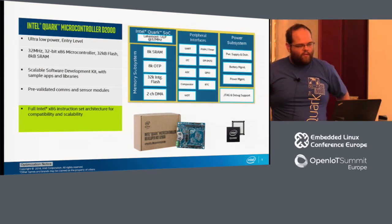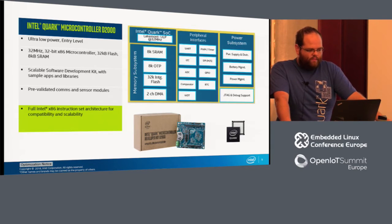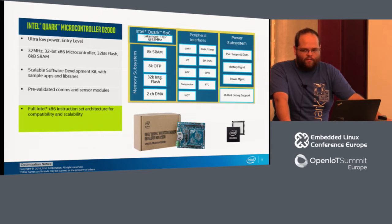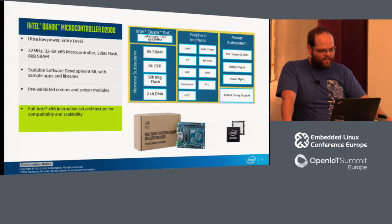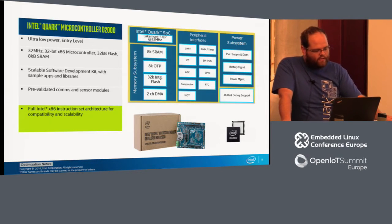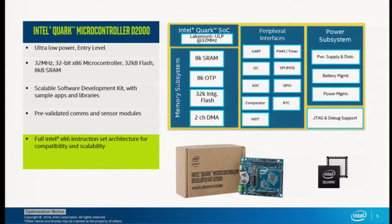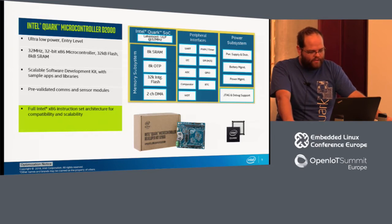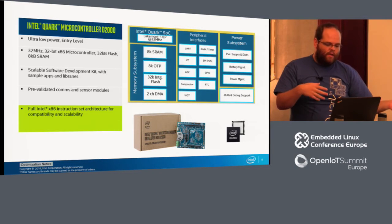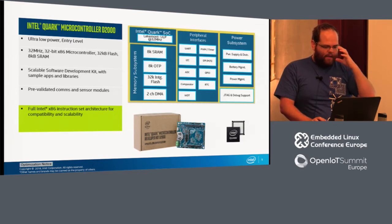The first MCU is the Quark D2000 — a really low-powered entry-level microcontroller. It has 32K of flash, 8K of RAM, runs at 32 MHz and is x86-based. It has standard peripherals like UART, PWM, SPI, GPIO, and RTC. It comes in a development kit available from DigiKey or Mouser, with an Arduino-compatible form factor so you can use Arduino shields.